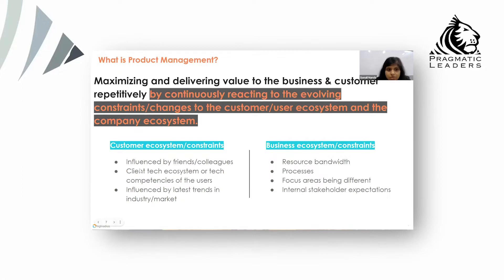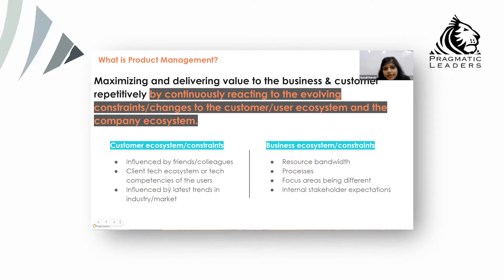Either you have new customers or new industries, or even the same customers whose needs five years back may not be the same five years later. They are influenced by friends, colleagues, their own tech ecosystem — if they're using tech products, their own tech competencies are improving. They're also influenced by the latest trends in the industry or market. Maybe five years back, people didn't worry about getting a recommendation on e-commerce software on how to buy, but now that's become so common. So the implicit expectation of the user and how they're influenced by the world around them keeps changing.